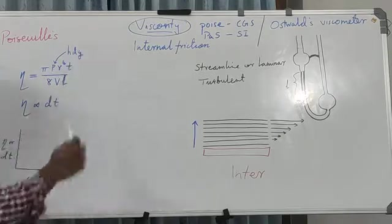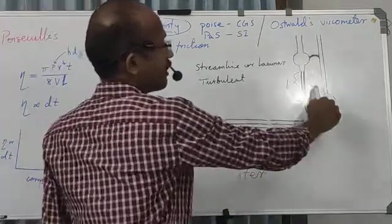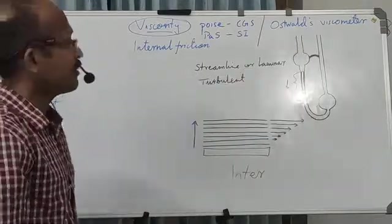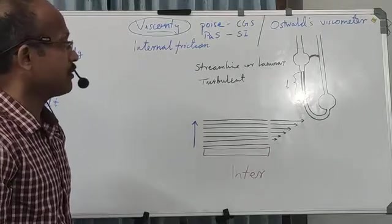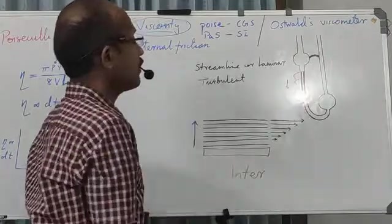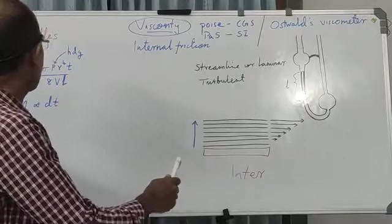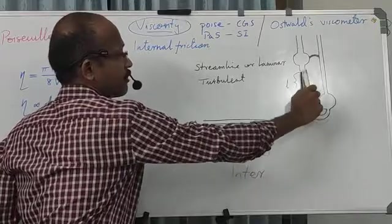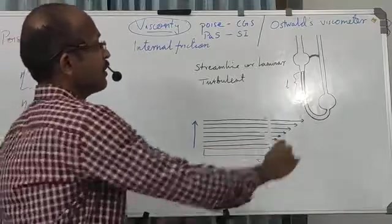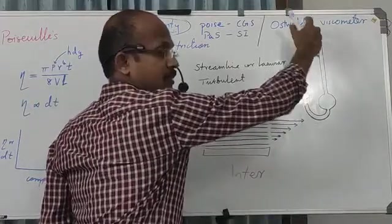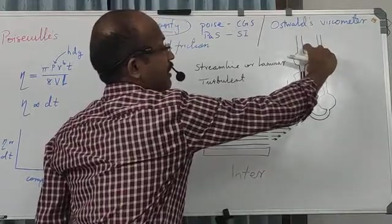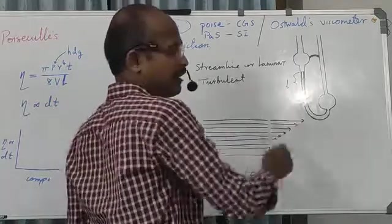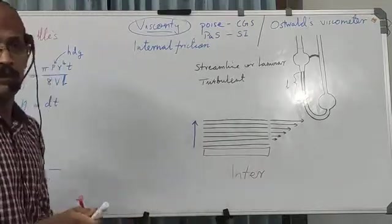This is Poiseuille's equation. Now we consider the Ostwald Viscometer — a glass setup for determining the viscosity and unknown compositions of mixtures. In this instrument, L is the length of the capillary tube and r is its radius. We allow liquid to flow through it; the driving force is H D G, the liquid column above the capillary. Using this setup, we can determine relative viscosity.